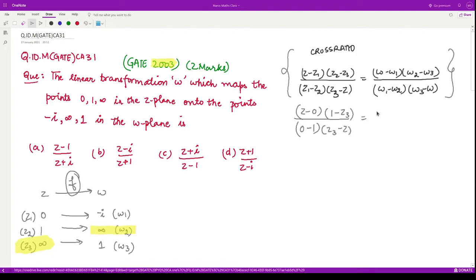On the right-hand side we won't substitute for w2. w1 is -i, w2 as such, w3 minus the value is 1. w1's value is -i minus w2, and then we have w3, which is 1 minus w.